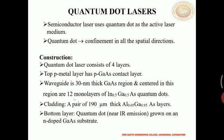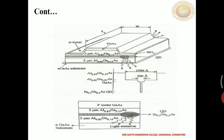In a quantum dot laser, the quantum dots play the most important role of active atoms. It consists of four layers. The top P metal layer has a gallium arsenide contact layer and its waveguide is 30 nanometers. The cladding consists of a pair of 190 micrometer thick aluminium gallium arsenide layers, and the bottom layer is a quantum dot grown on an N-doped gallium arsenide substrate.